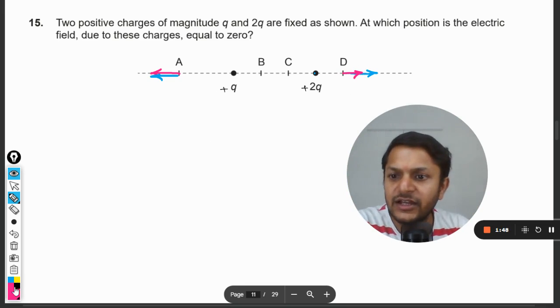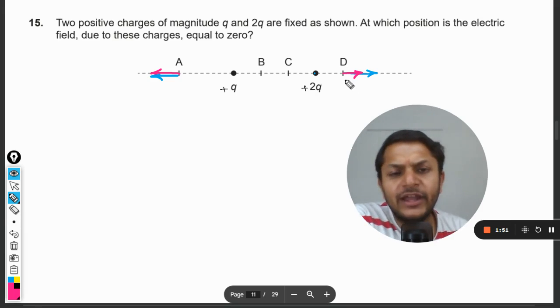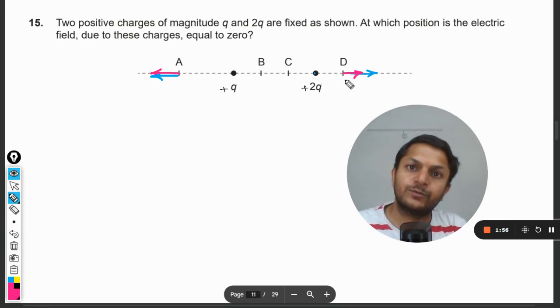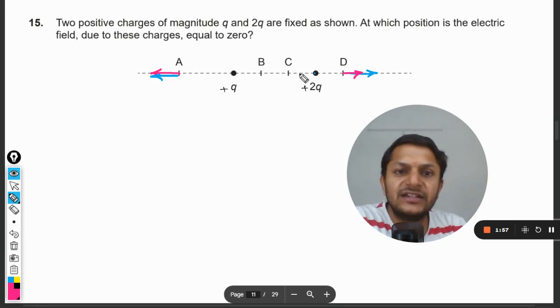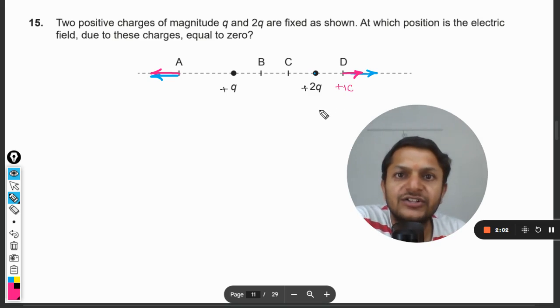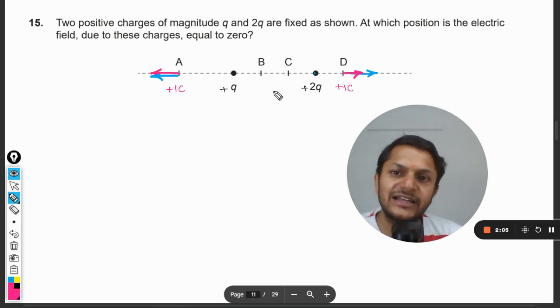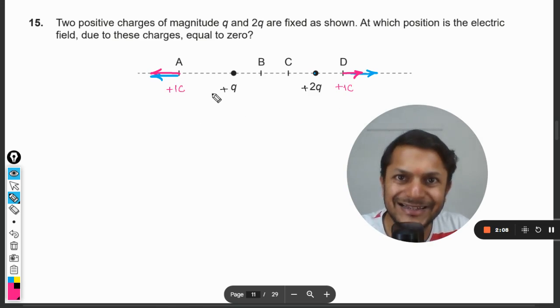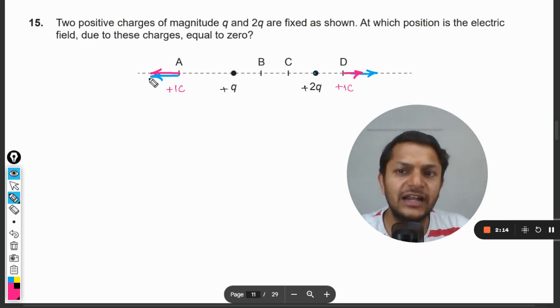Whenever we are trying to find the electric field intensity at one particular point, you can imagine that there is a positive unit charge placed at that point. The positive charge will be repelling each other, so this positive charge is going to repel this positive unit charge, and that is why there will be a force towards left hand side.